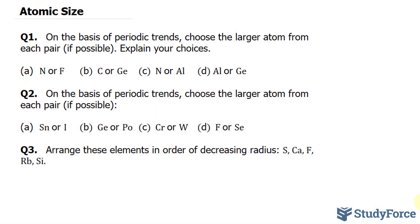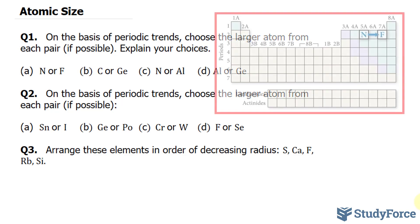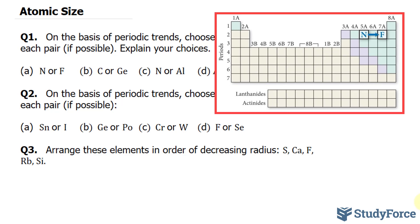We have nitrogen and fluorine. Nitrogen atoms are larger than fluorine atoms because as you trace the path between nitrogen and fluorine on the periodic table, as shown on your screen, you move to the right within the same period.